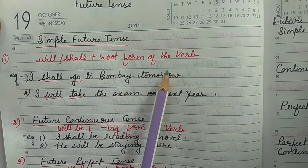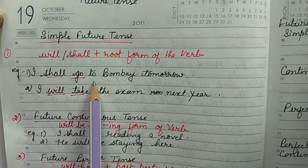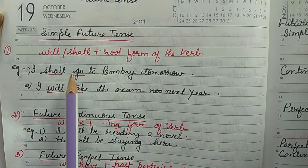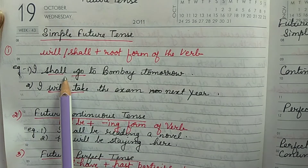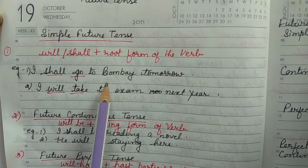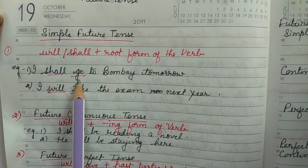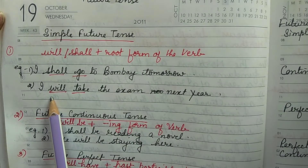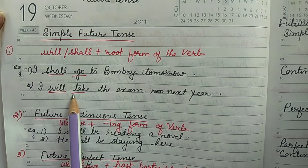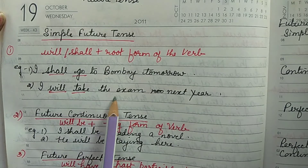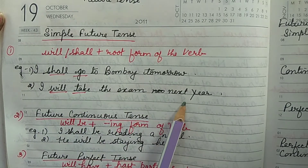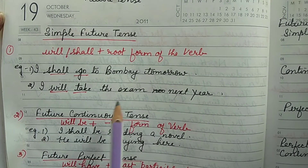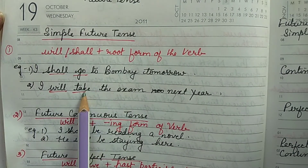Now we will discuss the structure of the simple future tense. The structure is: will/shall + root form of the verb. For example: 'I shall go to Bombay tomorrow' — subject + shall + main verb + rest of the predicate. We can also use 'will': 'I will take the exam next year.' These are simple ways to express the future tense, using the root form of the verb.